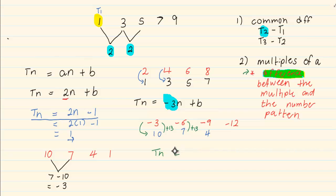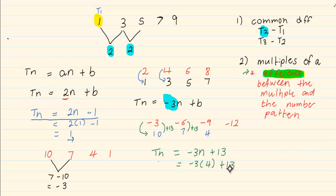So our final answer is TN is equal to minus 3N plus 13. Now let us see if the answer works — let us substitute N as 4. Minus 3 times 4 is minus 12, plus 13 will give me 1. So term 4 is equal to 1. And if we look: term 1, term 2, term 3, term 4 is equal to 1. Thank you for watching.